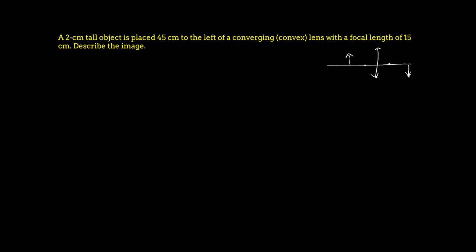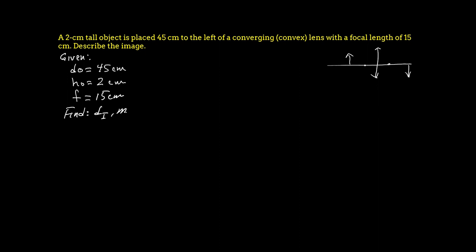So what we're given: do is 45 centimeters, the height of the object is 2 centimeters, and the focal length is positive 15 centimeters because this is a converging lens. We need to find the image distance di and the magnification. The thin lens equation is: 1/di + 1/do = 1/f.